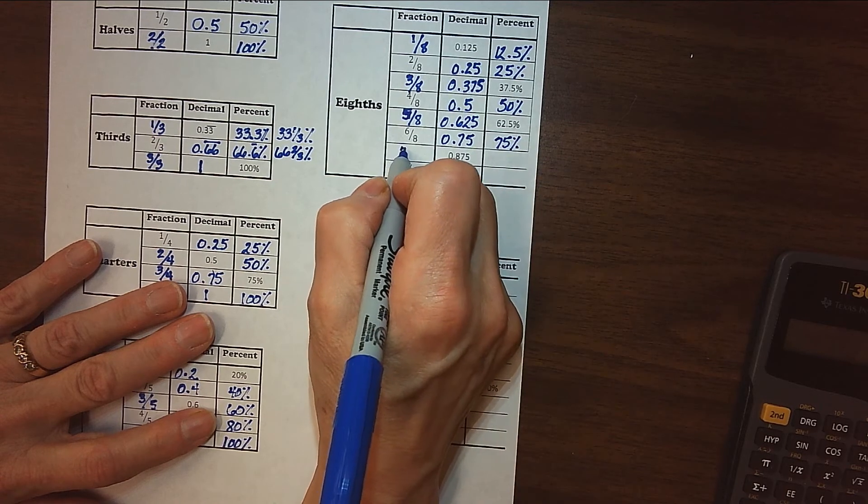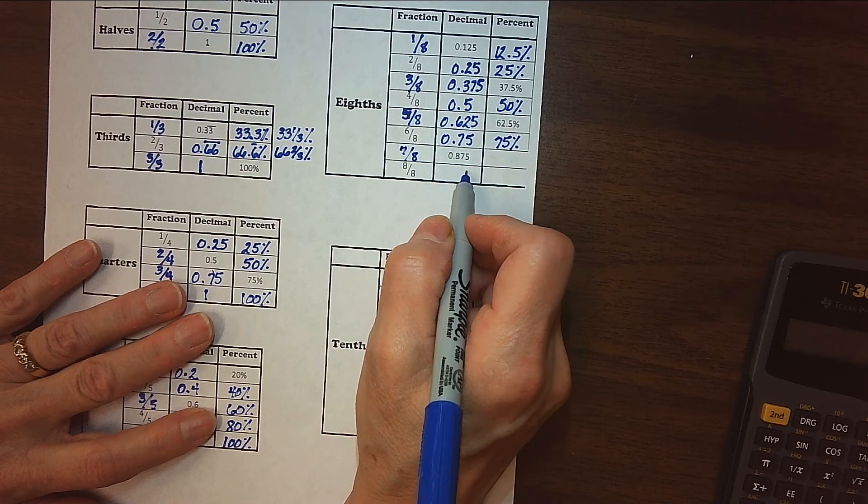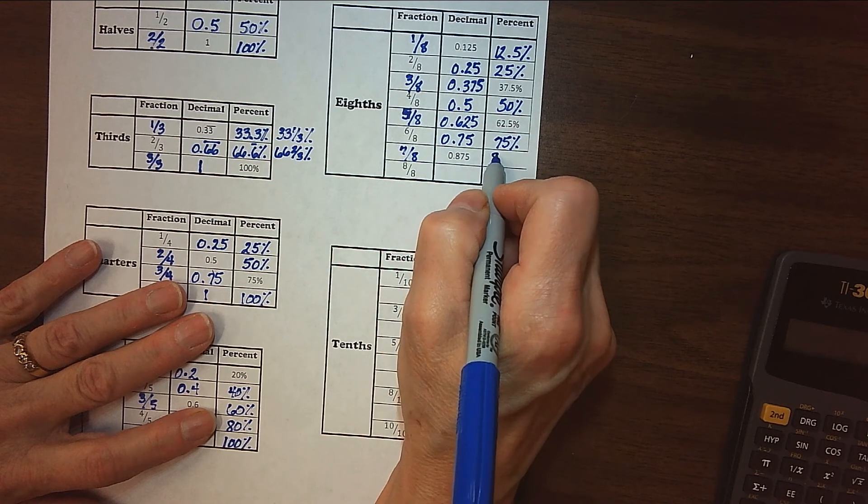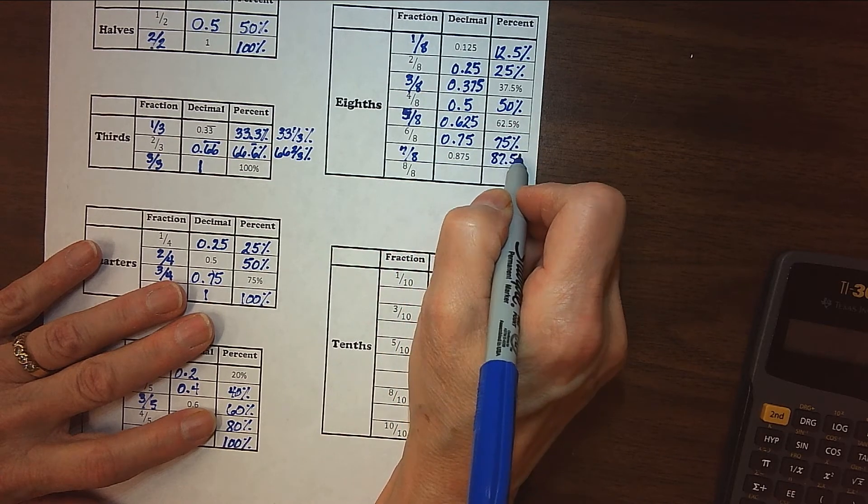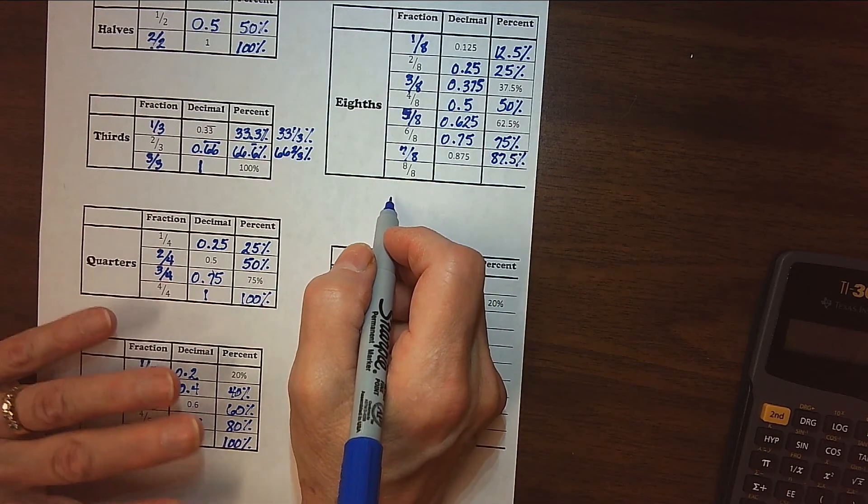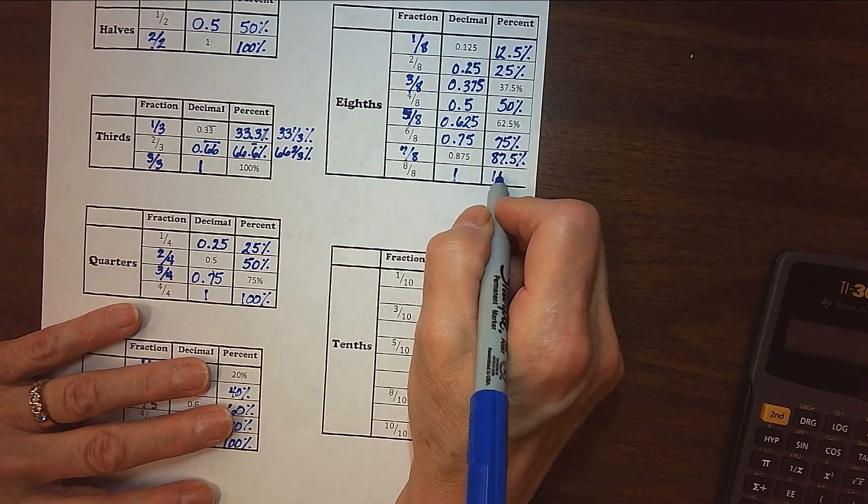Now, finally, seven-eighths. And that's our 0.875 and 87.5%. Then, of course, eight-eighths is one whole or 100%.